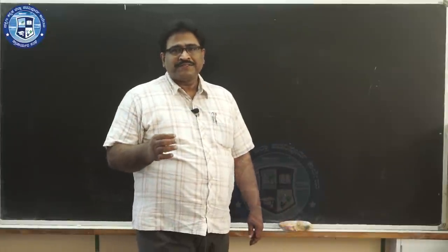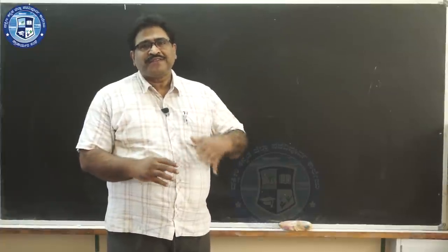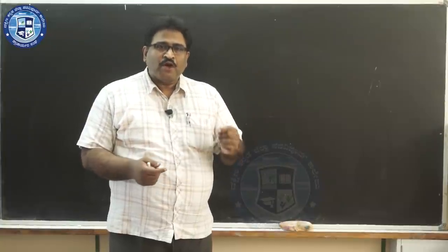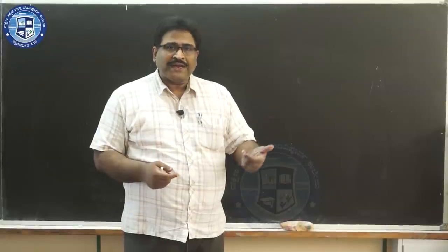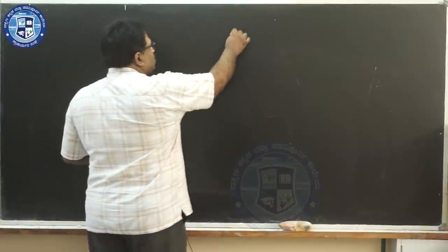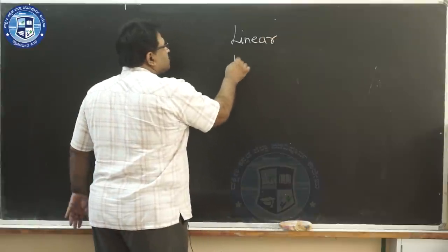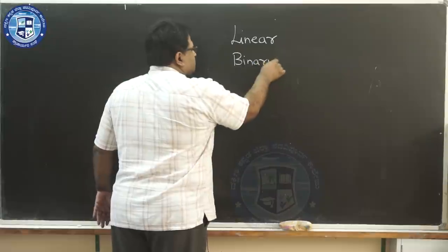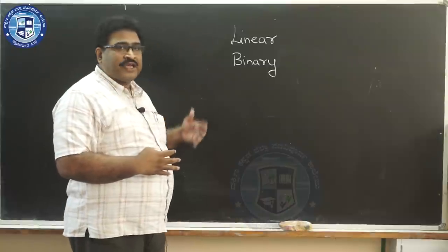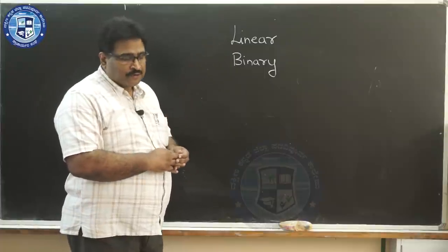Today we are going to start with the searching methods. You have seen the different operations that can be performed on an array or on a linear list. One of those operations is searching, and we will be looking into two types: one is linear search and the second one is binary search. We will look into the difference between them and which method is suitable for n number of values.